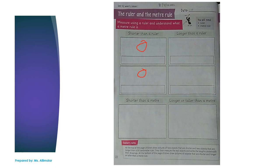For 'longer than a ruler,' draw objects that are longer than 30 cm. Please draw something you can find at home — anything, any object. After you draw, please go to the real object. Of course you have a chair or table at home. I want you to measure the exact measurement, then write the length below the drawing.